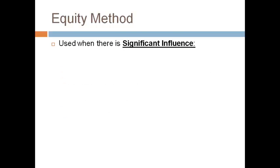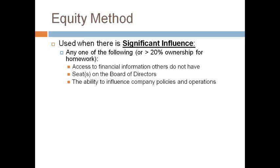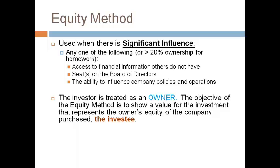The equity method is used only when the investor has significant influence. Significant influence is present when the investor has access to financial information other investors do not, has a seat on the board, or has a clear ability to influence operating decisions. An investor with significant influence is treated as an owner, and the equity method reports the investment on the balance sheet at a value that is a representation of ownership.